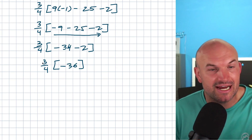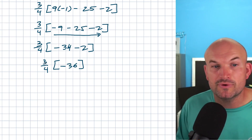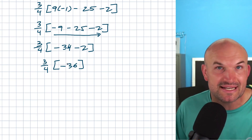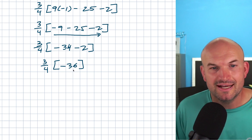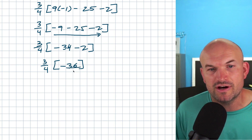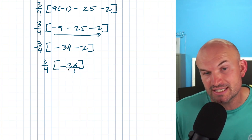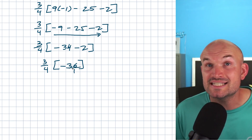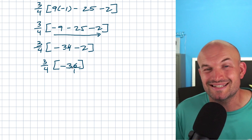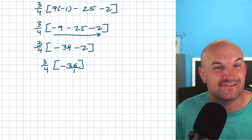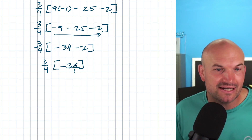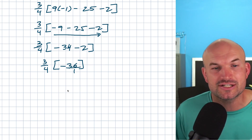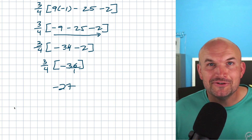Now you guys can see I have three-fourths times a negative 36. I can rewrite 36 as over one, and four divides into negative 36. That's going to be negative nine, and negative nine times three is going to give me a negative 27.